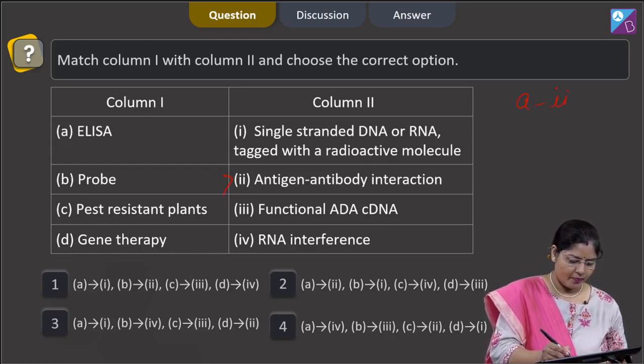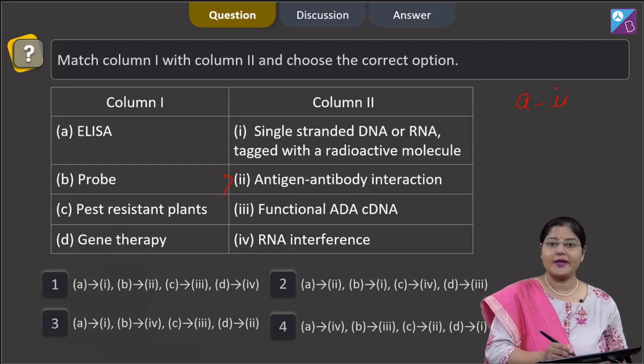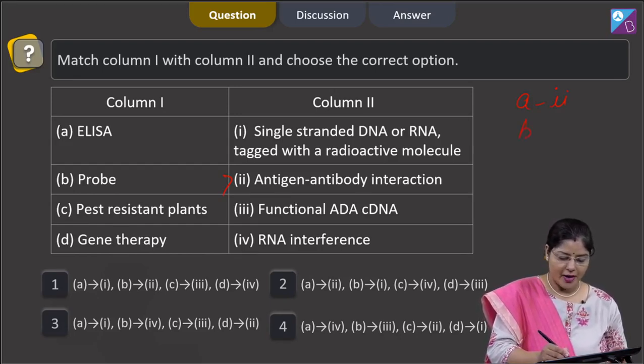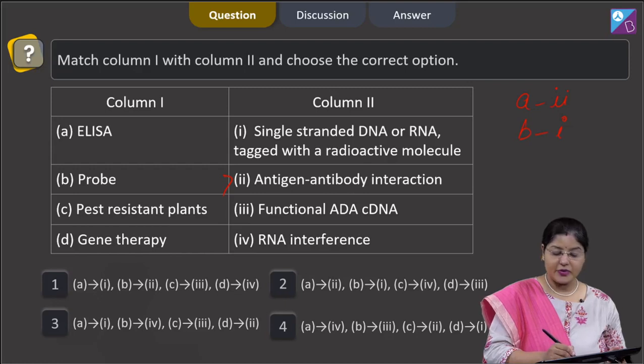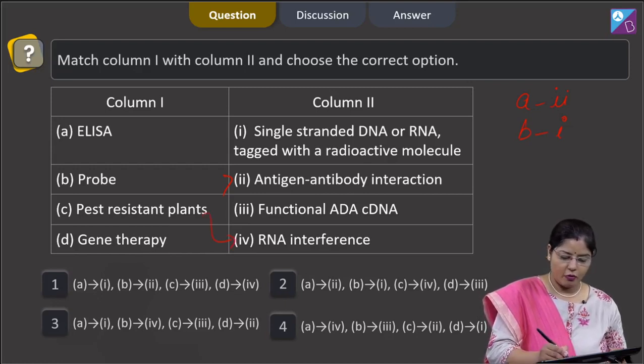Probe is single-stranded DNA or RNA tagged with a radioactive molecule, so B matches with 1. Pest-resistant plants, they are made by using RNA interference technology, so C matches with 4th.